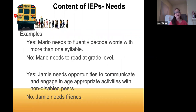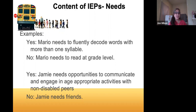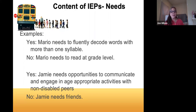Here are some examples of needs. A need might be: 'Mario needs to fluently decode words with more than one syllable' — you want to be specific. We're looking at where they are now and where we're trying to get this academic year. Another example: 'Jamie needs opportunities to communicate and engage in age-appropriate activities with non-disabled peers.' You don't want to say 'Jamie needs friends' — you want something more specific, and you'll notice the use of 'non-disabled peers' relates specifically to the LRE requirement.